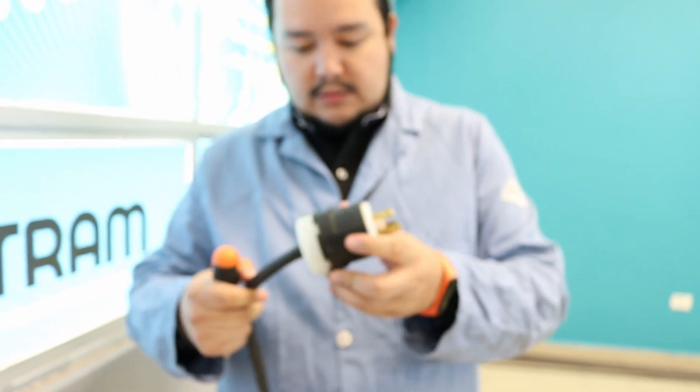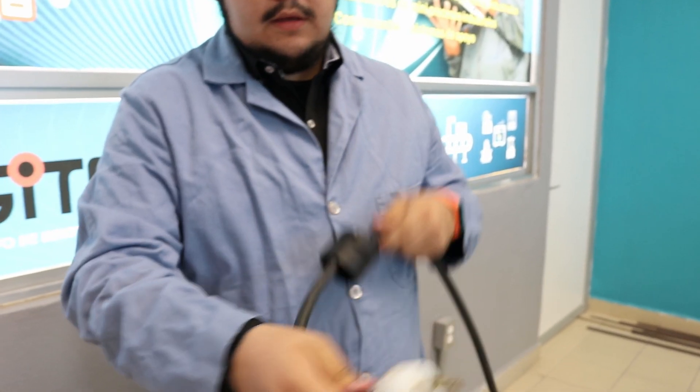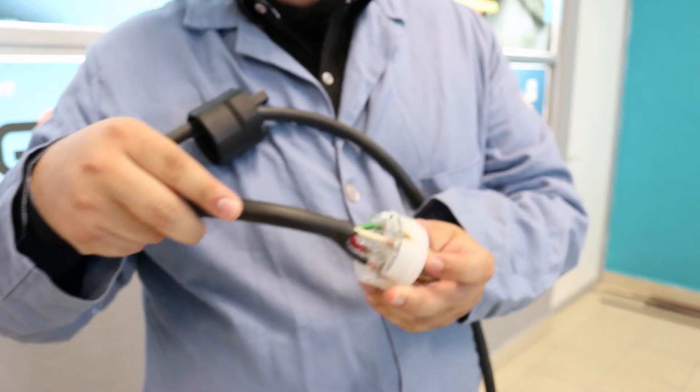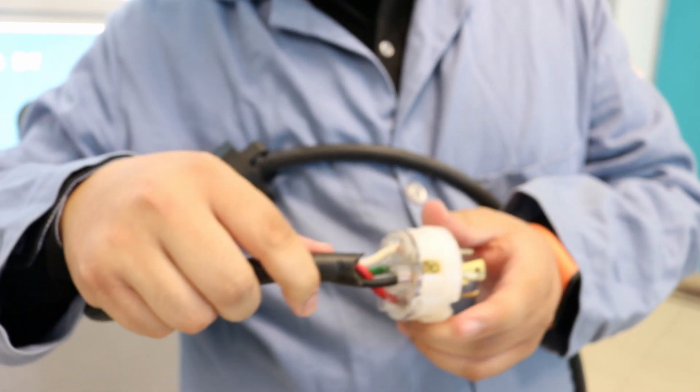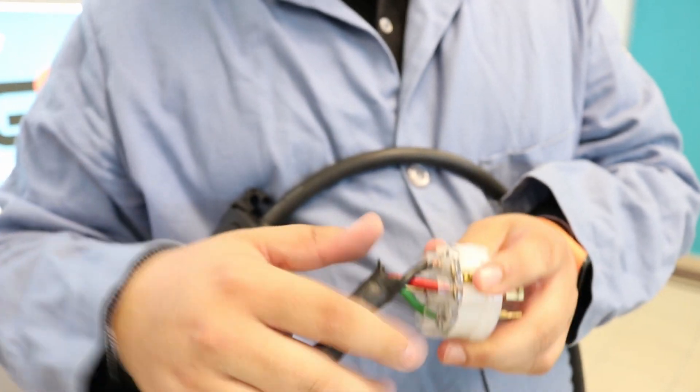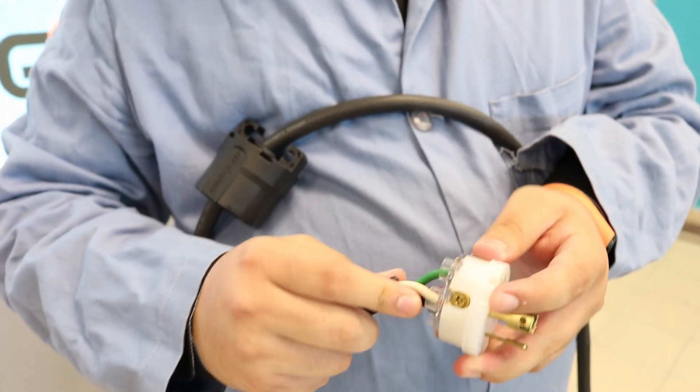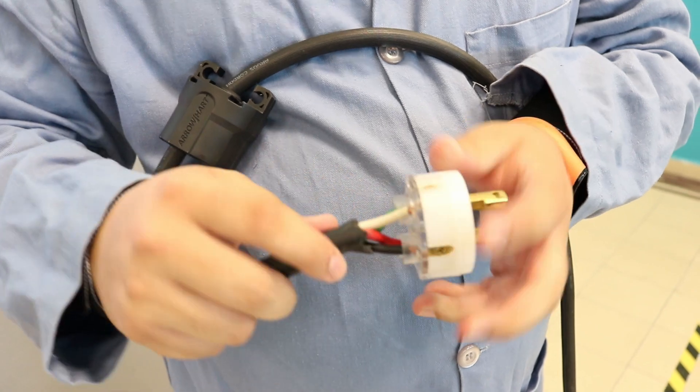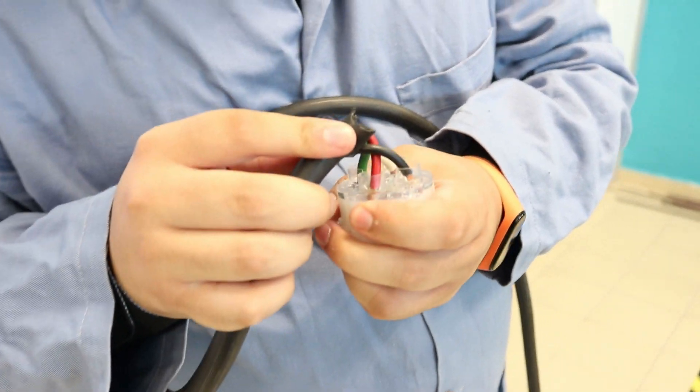We can see the interior of the bi-facet connection. Why is it bi-facet? Because we have two lines, one neutral, and one ground cable. We have the indicators here.